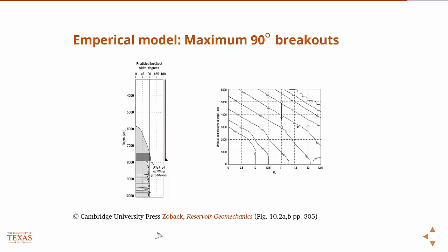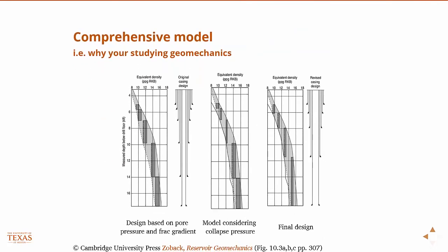Typically, the mud window is defined with pore pressure on the low side — you always want to be overbalanced; otherwise the well will flow back while drilling. The maximum mud weight is the point at which you create drilling-induced tensile fractures, known as the frack gradient. So the mud window runs from pore pressure on the low side to the frack gradient on the high side.